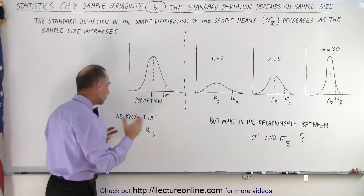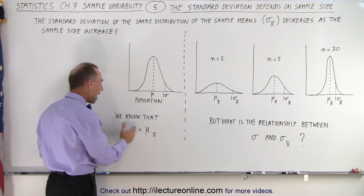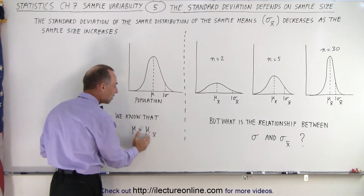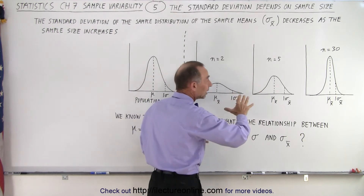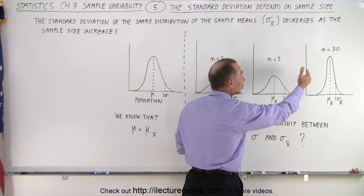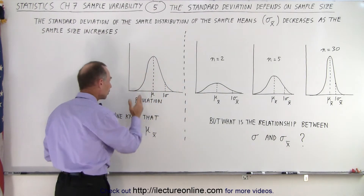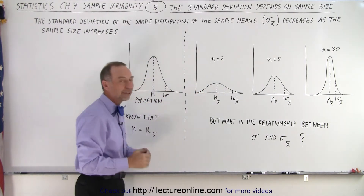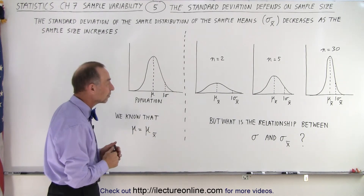We know from previous videos that the average of the population equals the average of the distribution of the means, especially when we take enough samples and the sample sizes are large enough. Then the average of the population will equal the mean of the distribution of the sample means.